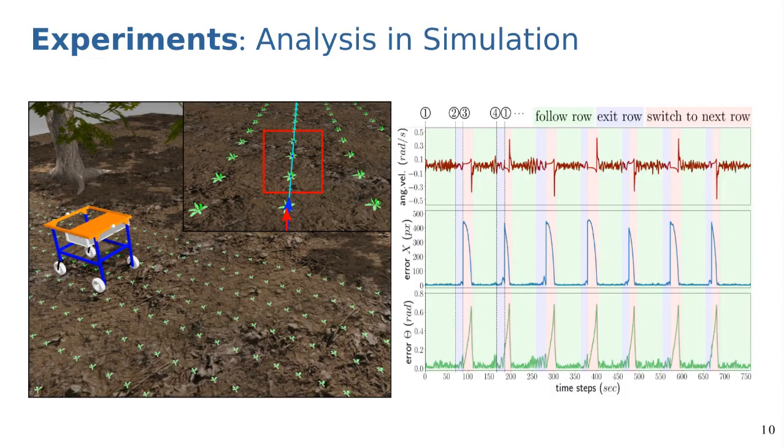We also created a simulated version of our robot in Gazebo which is built on a one-to-one scale and has the same kinematics of the real robot. In the right image you can see the error signals of displacement and orientation which both peak whenever the robot is switching between the rows.